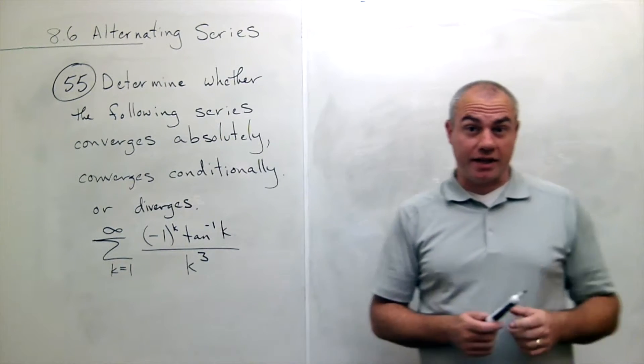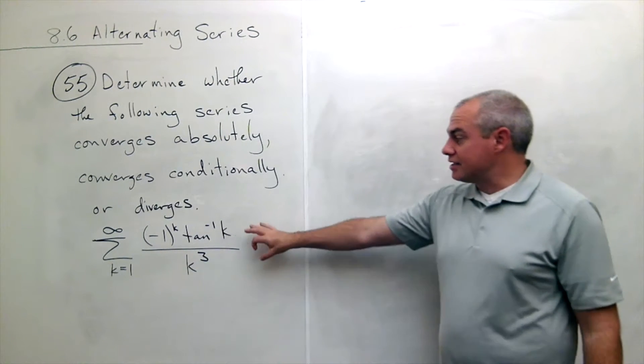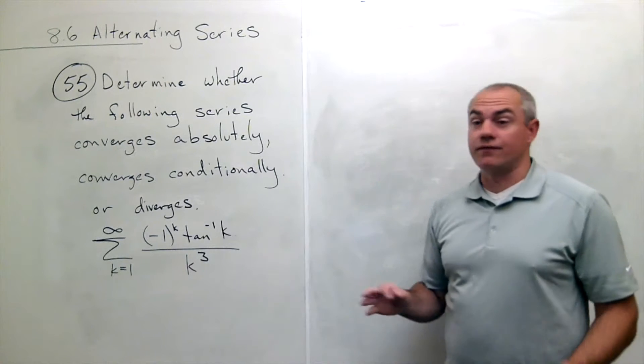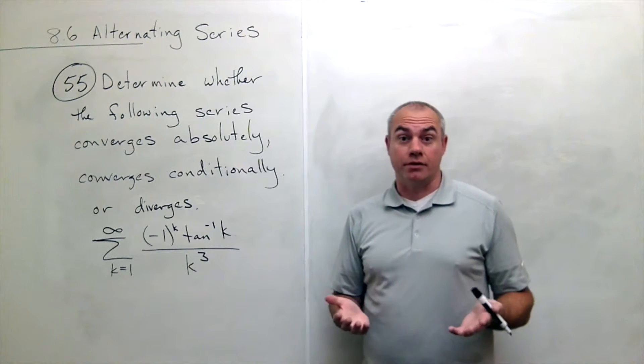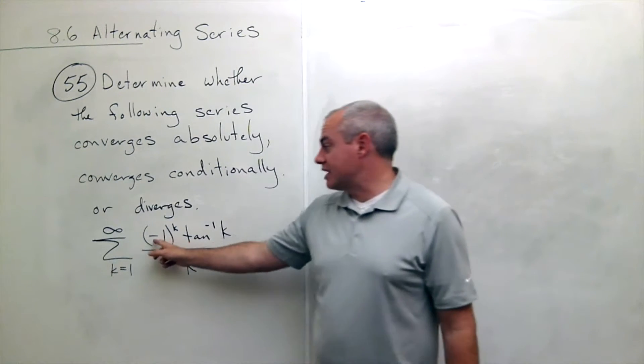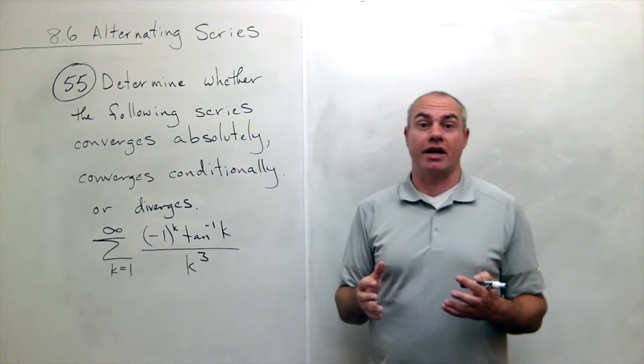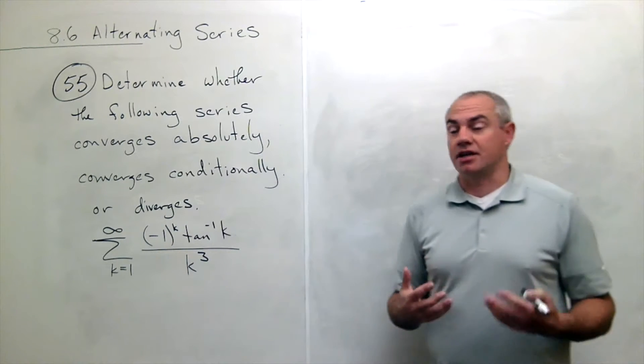Alright, so the first thing I'd like to do is I'd like to say, does this converge absolutely? So if I take out this negative one to the k, the alternating part, does this thing converge?